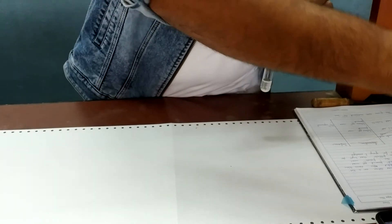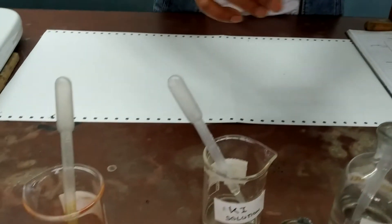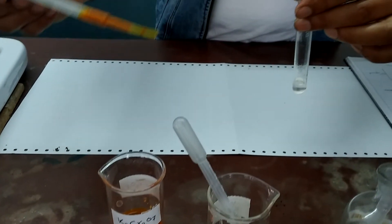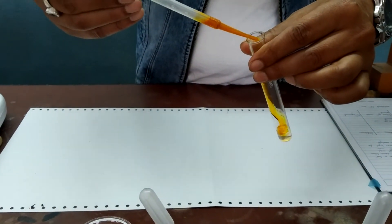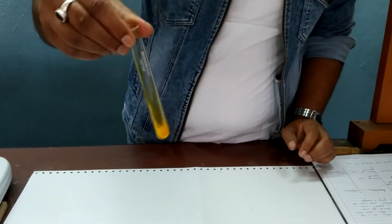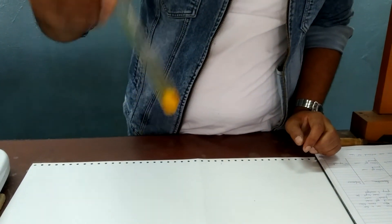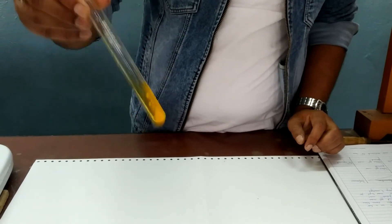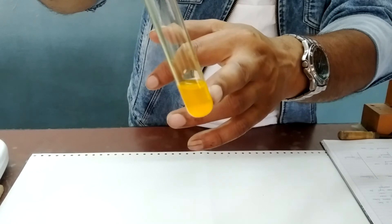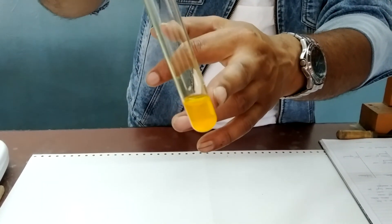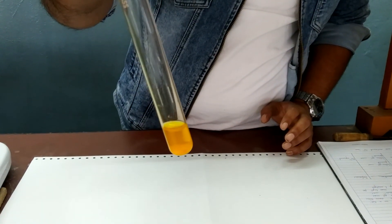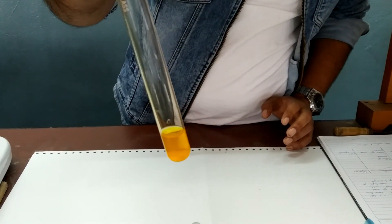And in the other test tube we add potassium iodide solution. As you can see again the same type of yellow coloration. So this yellow coloration confirms the presence of lead in the given sample.